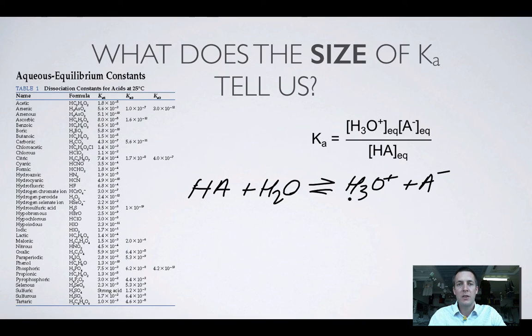In other words, our acid will be strong if Ka is very large, because most of HA will split up into these ions. If the acid is weak, and not very much of it does, then Ka will be small, because there will be lots of undissociated acid, and not very many ions.